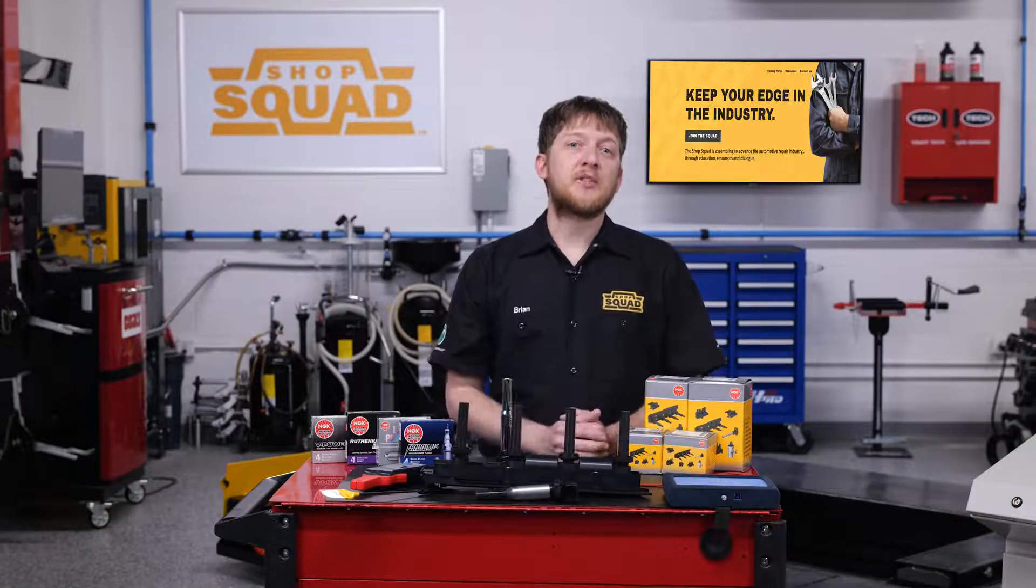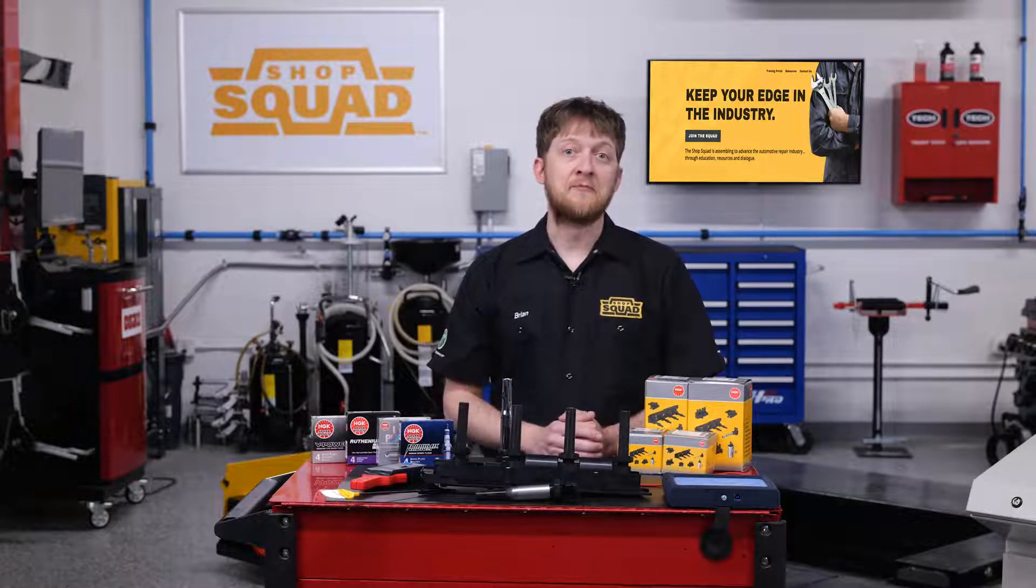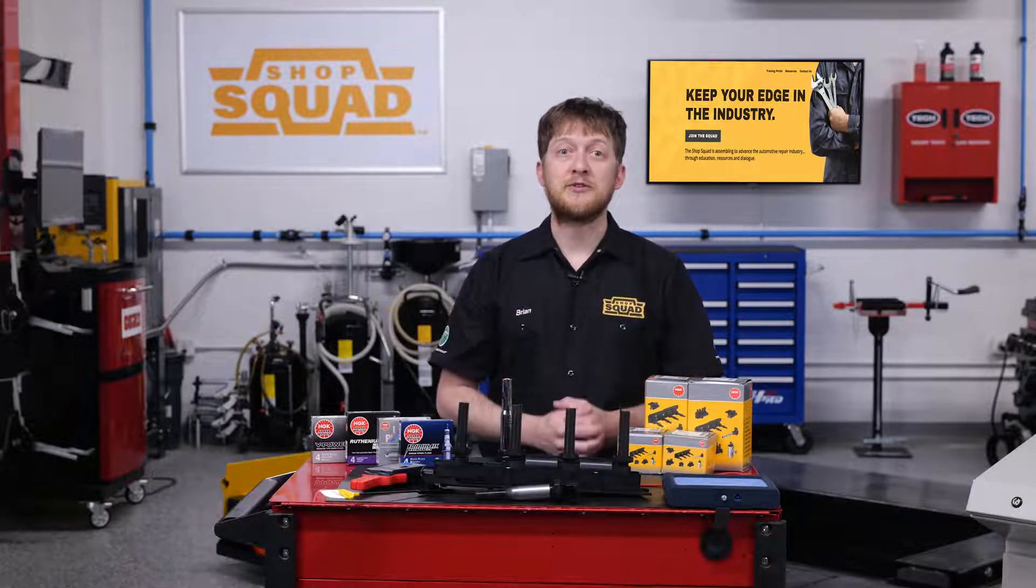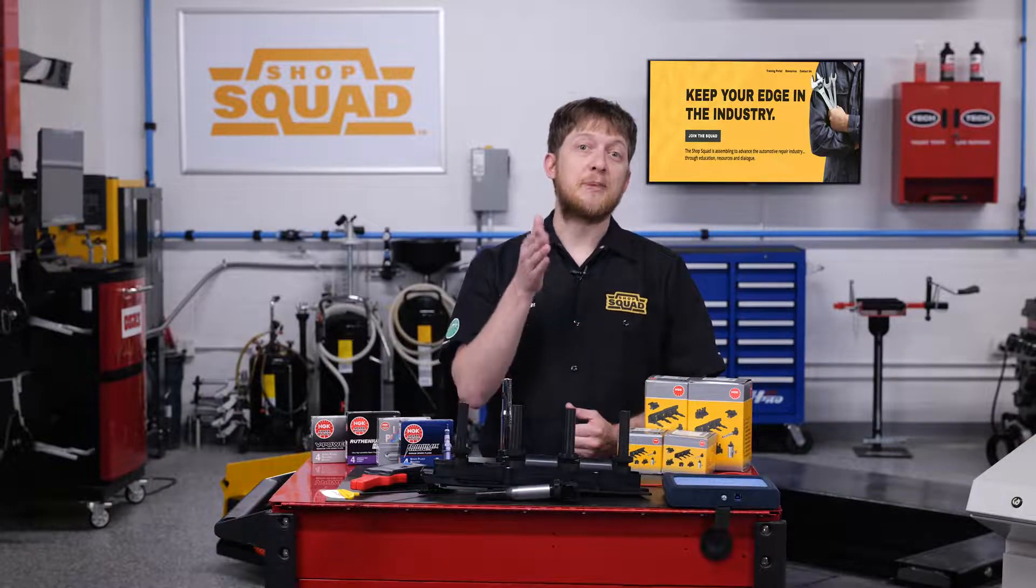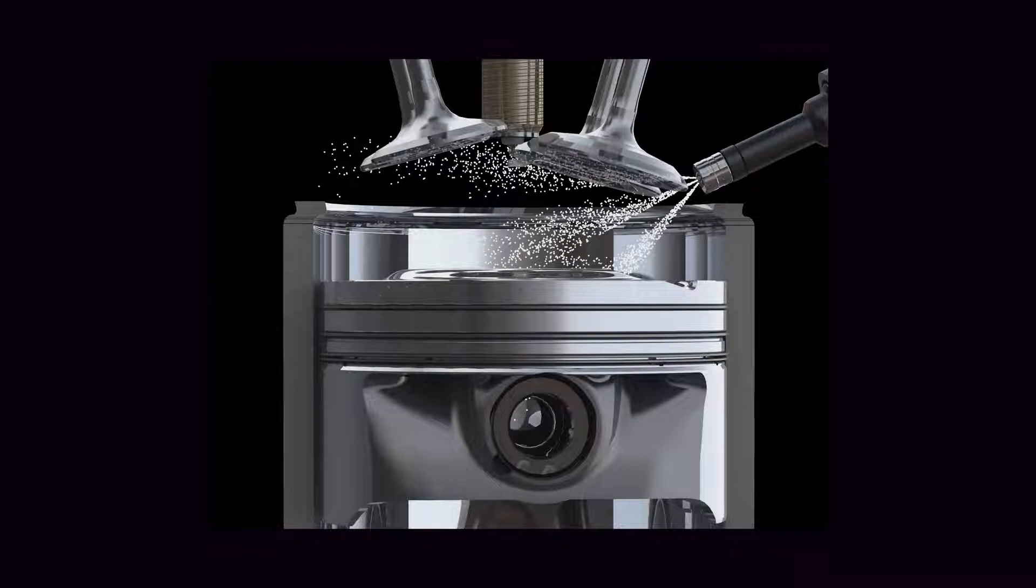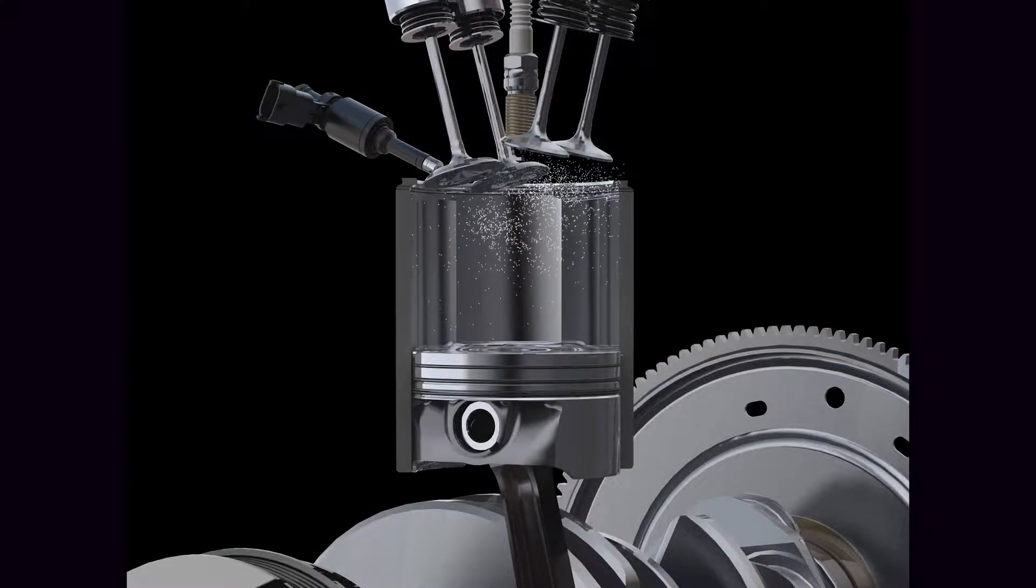The spike is where the coil discharges and the spark jumps from one electrode to the other. The spike changes depending on the resistance between the electrodes. The resistance depends on what is going on inside the combustion chamber. Imagine the air and the fuel inside the combustion chamber as ohm resistors between the spark plug electrodes.